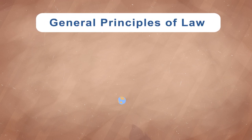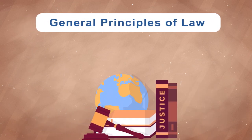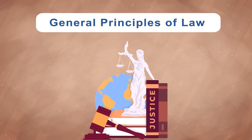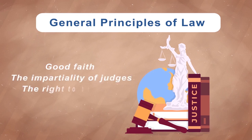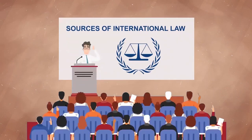General Principles of Law refers to universal principles of fairness and justice recognized in civilized legal systems around the world. Examples are good faith, the impartiality of judges, and the right to be heard. International tribunals may use these principles when they need to fill gaps and cannot find authority in other sources of international law.